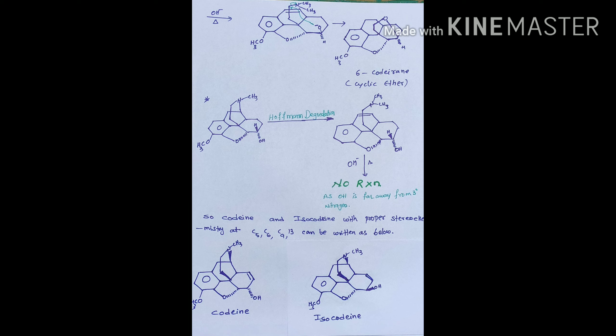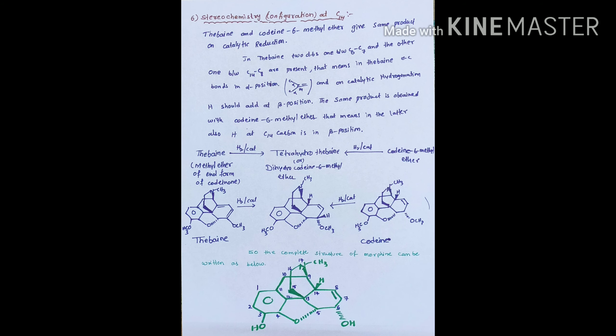Now we go for the discussion about the stereochemistry of morphine at C9 and C13 carbons. When dihydrocodine is subjected to Hofmann degradation, it forms the Hofmann product and does not undergo any further reaction. When dihydroisocodine is subjected to Hofmann degradation, it first forms the Hofmann product and then undergoes cyclization to form a cyclic ether known as oxocodine. This reaction confirms that the ethanamine chain is attached at C9 and C13 carbon in the beta position.